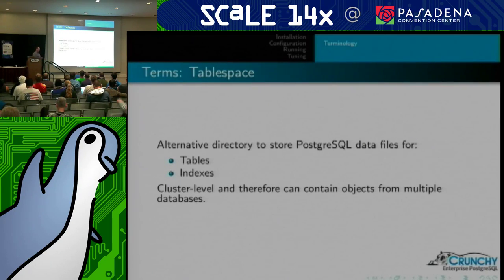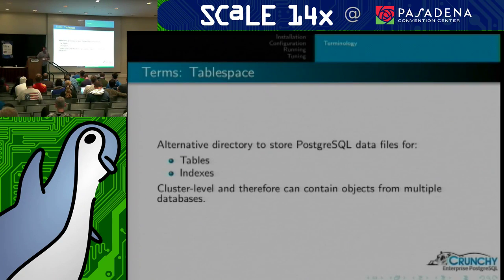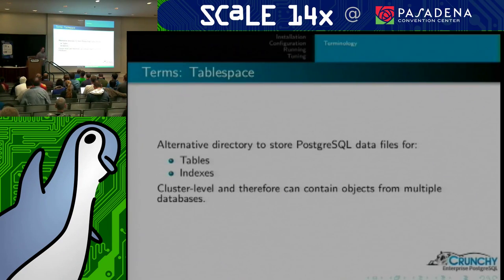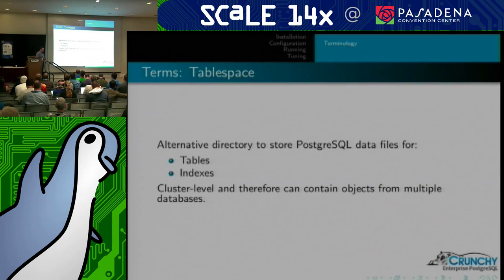Tablespaces are locations for other data files for Postgres. If you've got five different mount points on your system, you could have five different tablespaces. They are at a cluster level, meaning they can contain objects from multiple different databases. You can have files, tables, or indexes from different databases using the same tablespace. Tablespaces cannot be shared between instances or clusters, nor can they be moved — they are associated with a particular instance.